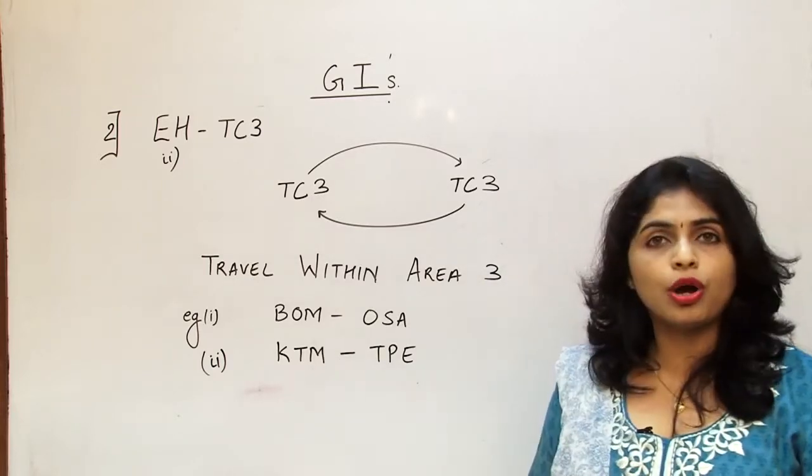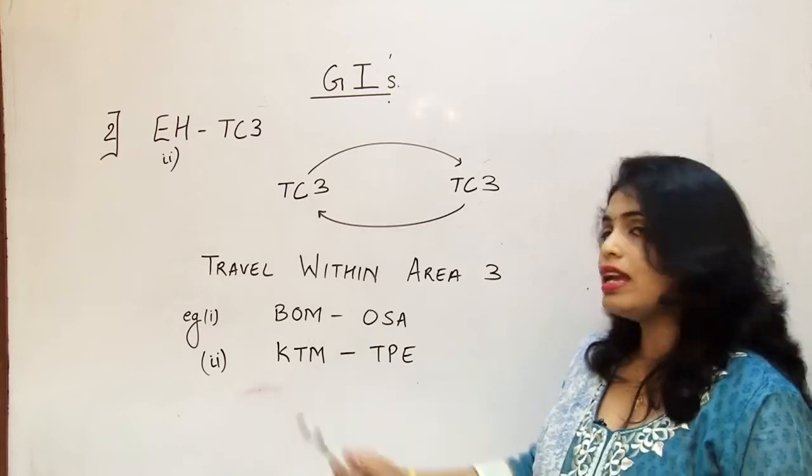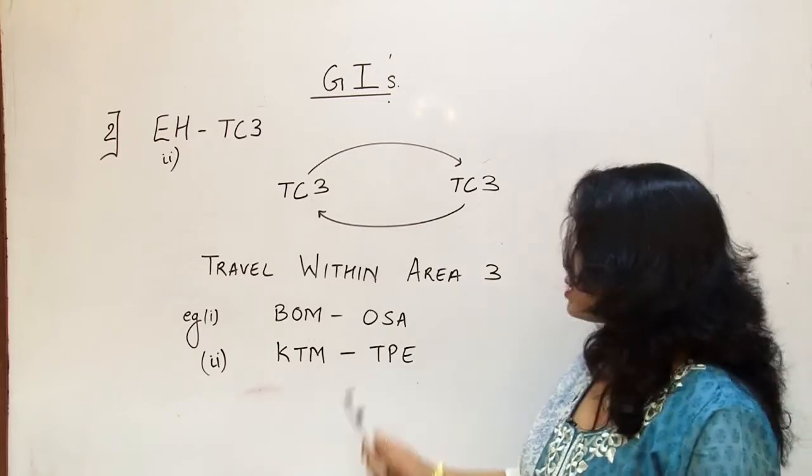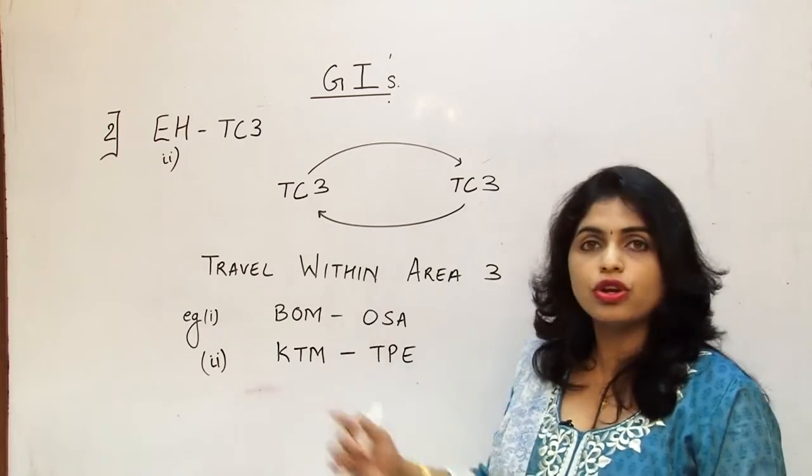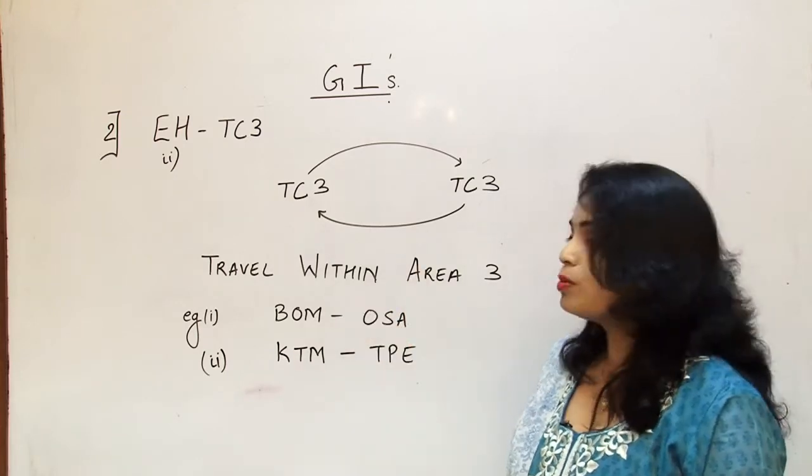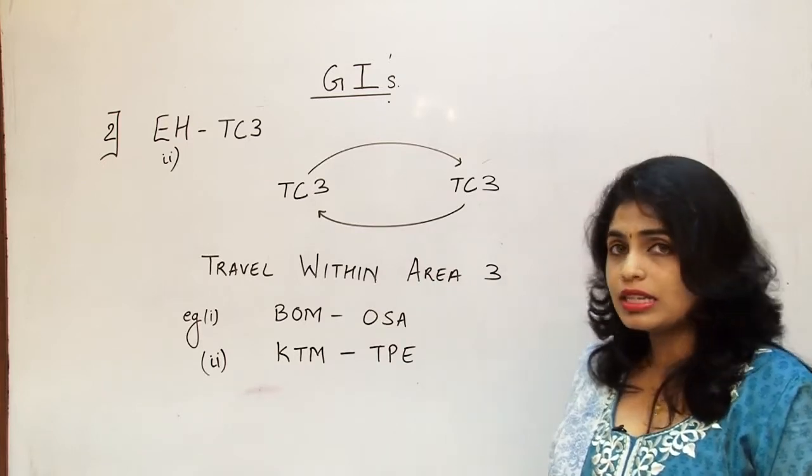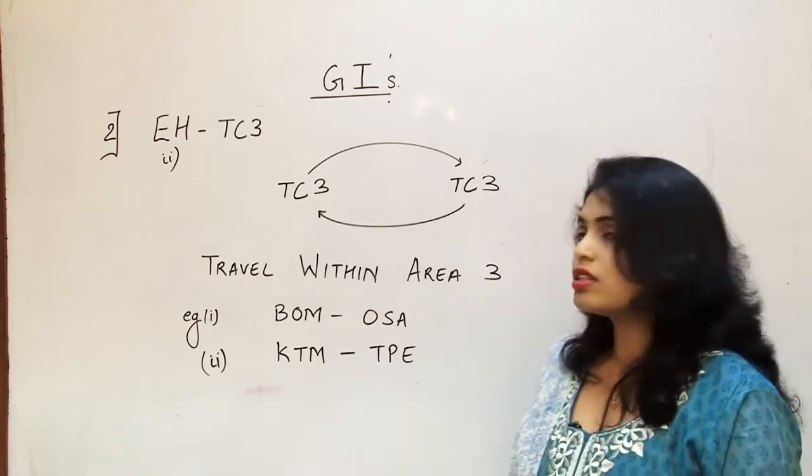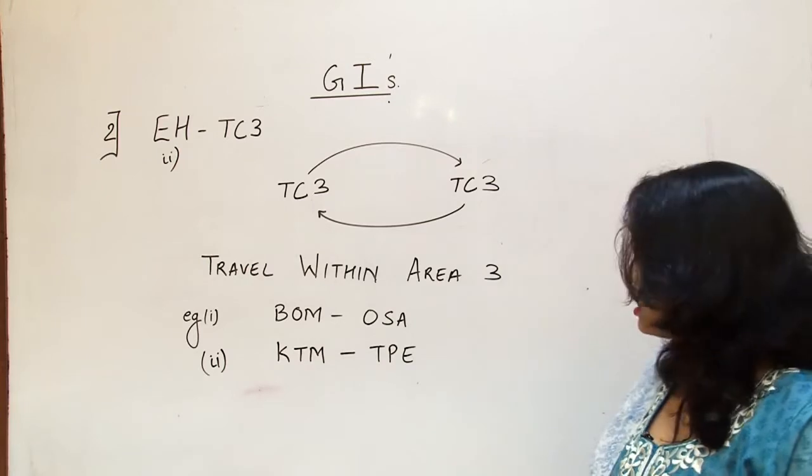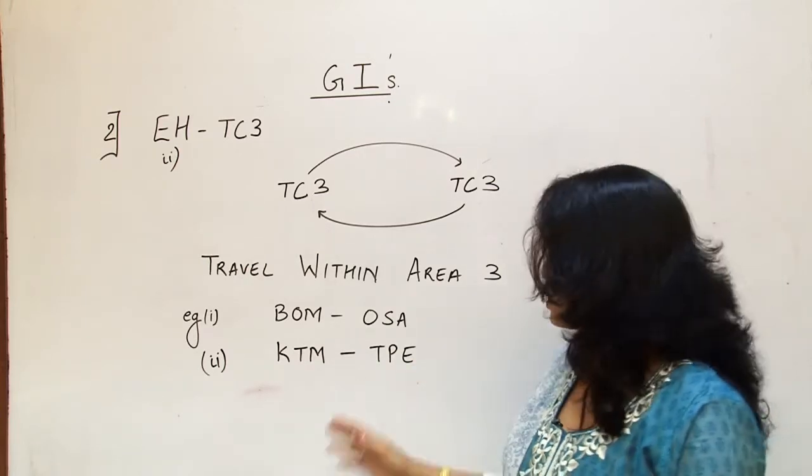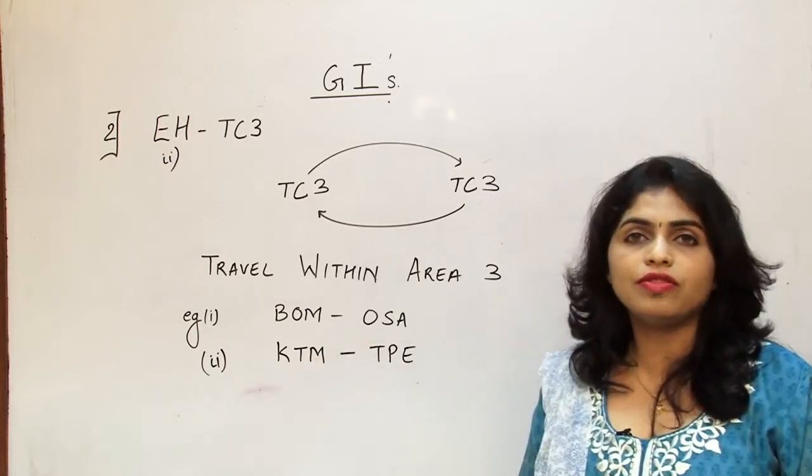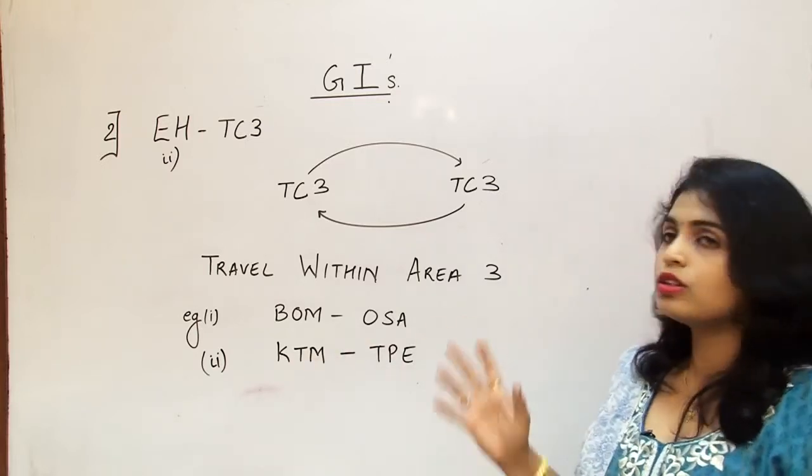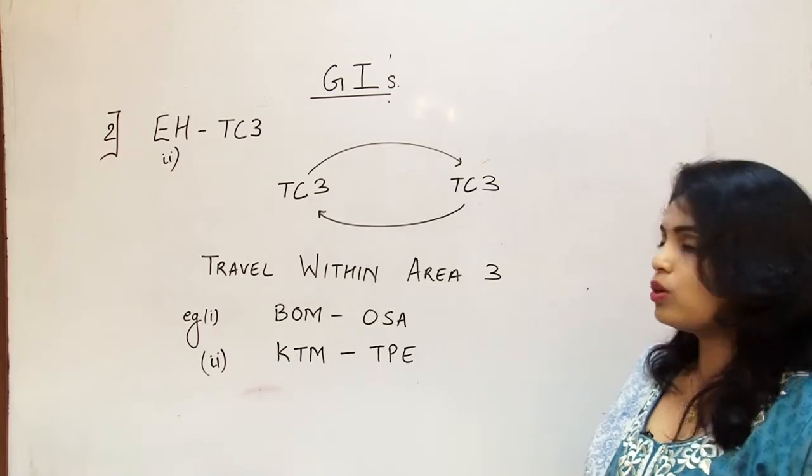We are talking about Bombay, which is Mumbai in India which is in area 3, and Osaka which is in Japan, which is again in area 3. So the flight is not leaving area 3, so the global indicator routing is denoted by Eastern Hemisphere, that is EH. Next is Kathmandu in Nepal and Taipei which is in Chinese Taipei, which is again in area 3. Here again the flight does not leave area 3, so clearly the global indicator happens to be only EH.